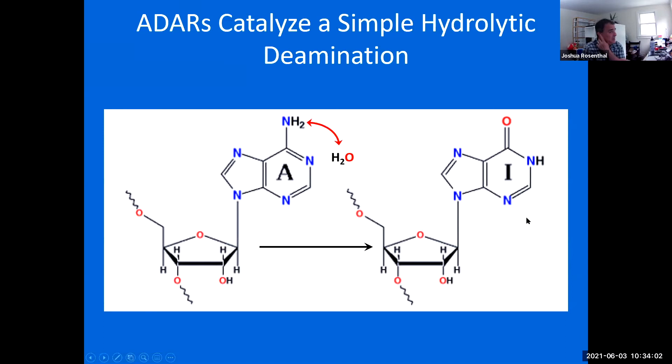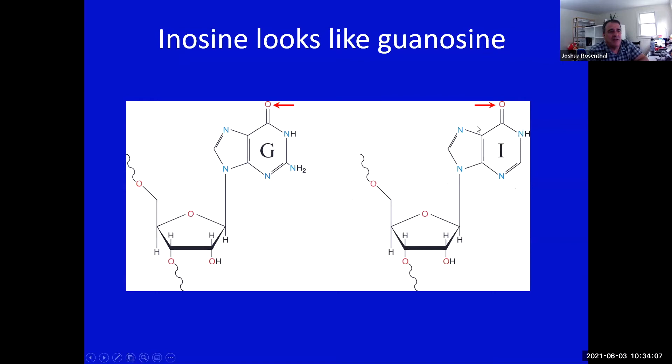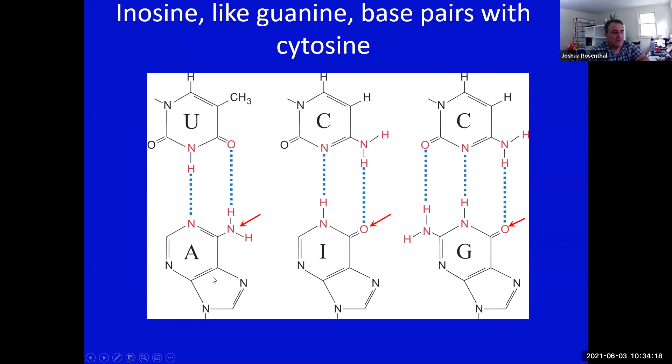However, this molecular entity is now inosine. And if you look at inosine at this position, it looks very much like G and that has consequences to Watson and Crick base pairing. So for instance, A usually base pairs with U in RNA, but I inosine like G base pairs with C.